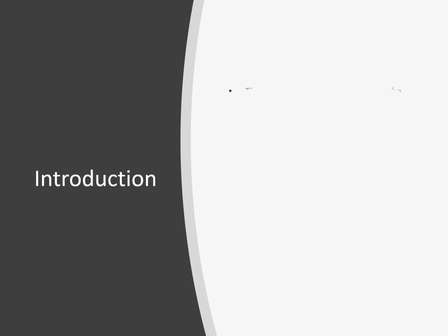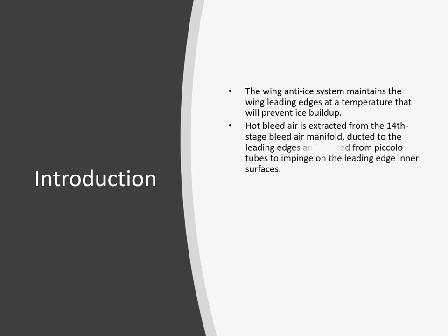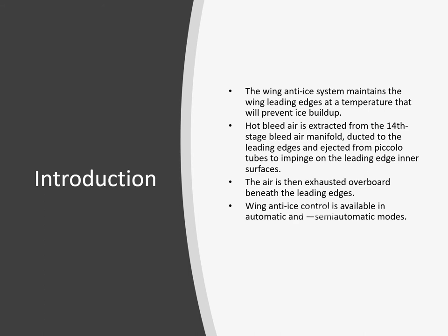The wing anti-ice system maintains the wing leading edges at a certain temperature to prevent ice build-up. It's quite efficient, modulating the wing anti-ice valves to achieve a target temperature - no more, no less. Hot bleed air is extracted from the 14th stage bleed air manifold, ducted to the leading edges, and ejected through piccolo tubes which impinge on the leading edge inner surfaces. The air is then exhausted overboard beneath the leading edges through vents.